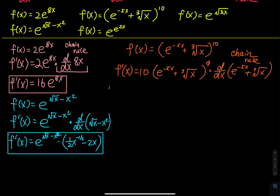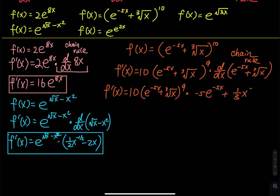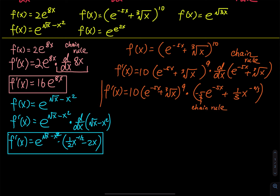Continuing, f′(x) = 10·(e^(−5x) + ∛x)^9, and then the derivative of the inside. The derivative of e^(anything) is e^(anything) times the derivative of the exponent, which gives −5·e^(−5x). For the cube root term, bring the 1/3 down and reduce the power to −2/3, giving (1/3)x^(−2/3). So the final answer is 10·(e^(−5x) + ∛x)^9·(−5e^(−5x) + (1/3)x^(−2/3)).